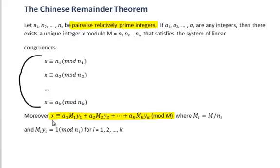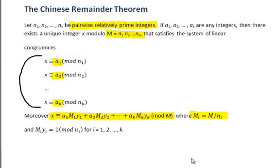That solution is x, where x is given by the formula. In order to solve the system, we need to find the values of a_i, m_i, and y_i, for i going from 1 to k. The values of a1 through ak are easy to find because those come from the original congruences. To find the values of m_i, first we find m, which is n1 times n2 all the way down to nk — the product of all the mods — and then m_i is given by m divided by n_i.